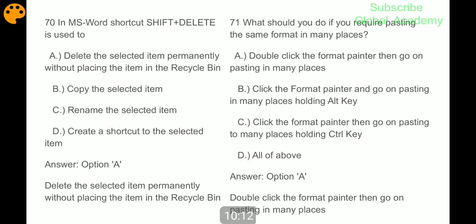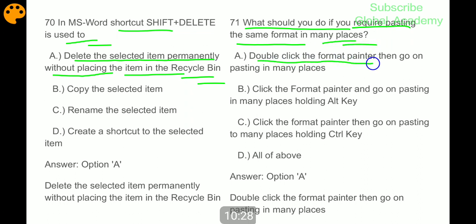In MS Word, shortcut Shift plus Delete is used to delete the selected items permanently without placing the items in a recycle bin. What should you do if you require pasting the same format in many places? Double click the format painter then go on pasting in many places, A part.